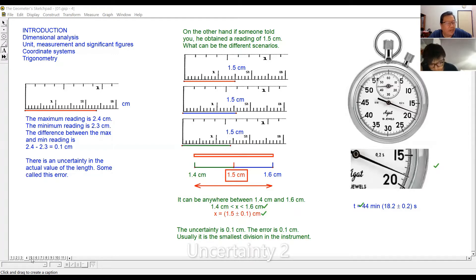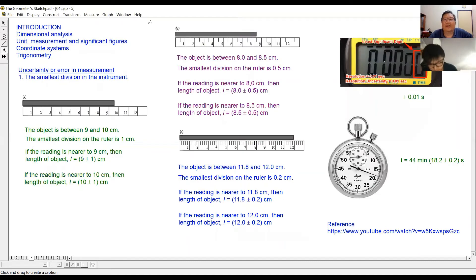Then we move on to another one. Clear the thing first, okay, move on to another one. Right, now look at the uncertainty or error in the instrument. It is the smallest division in the instrument, the smallest division.